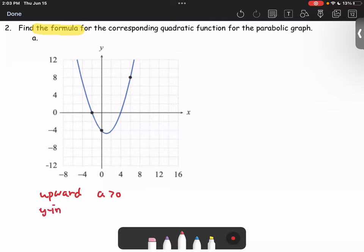The y-intercept is located at (0, -4). The x-intercepts are at (-2, 0) and (4, 0), plus an additional point we can use, the ordered pair (6, 8).